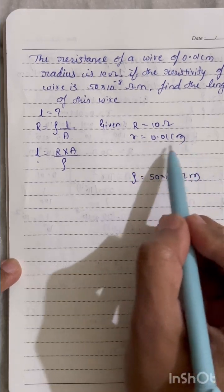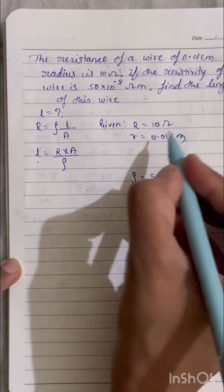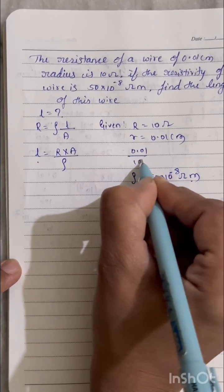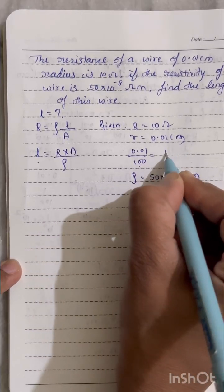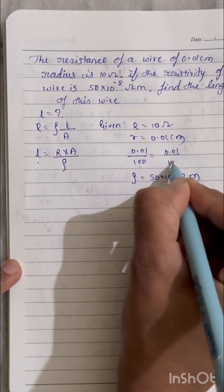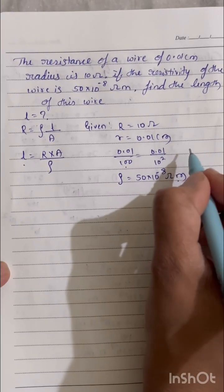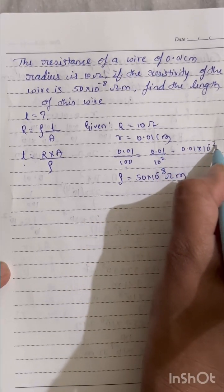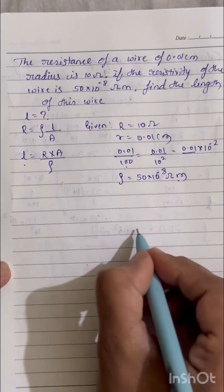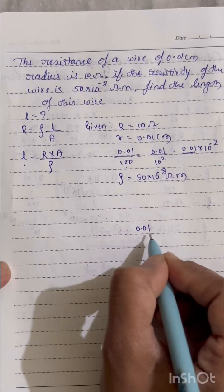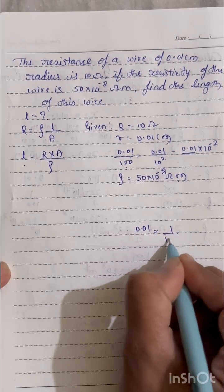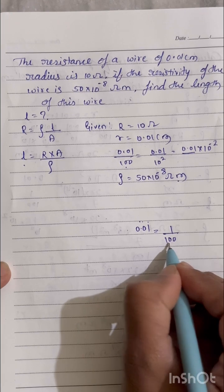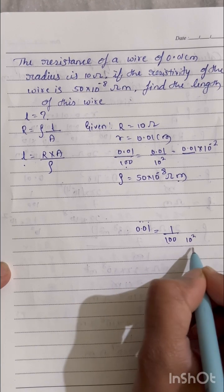See here, this is in meter, so let's convert this centimeter to meter. So to convert to meter what we will do, we have to divide it by 100. So this 100 I can write as 10 power 2. When I shift to the numerator it will become 0.01 times 10 power minus 2. Similarly, 0.01 which is in decimal, when I convert to the fraction it will become 1 divided by 100.